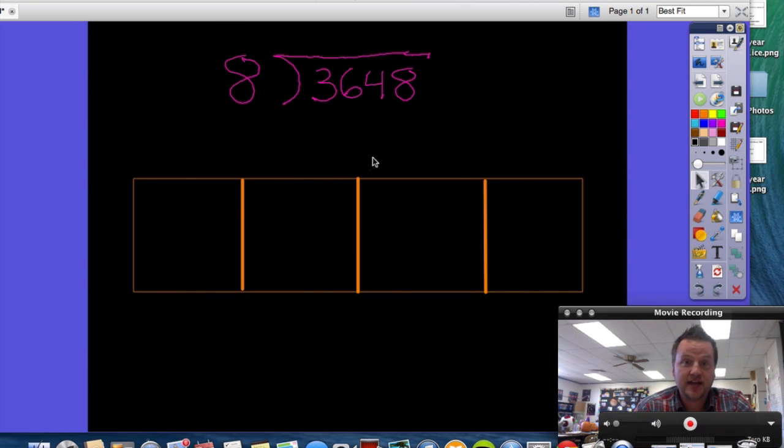Now, the first thing that your students are going to do is they're going to start to break this number 3,648 into expanded form. This should be really familiar to them since they've been doing it all the way since back in second and third grade. So what they're going to do is they're going to take this 3 and know that it's not a 3. It's actually the number 3,000, and they're going to use that number and they're going to write it in this box. That takes care of the 3.